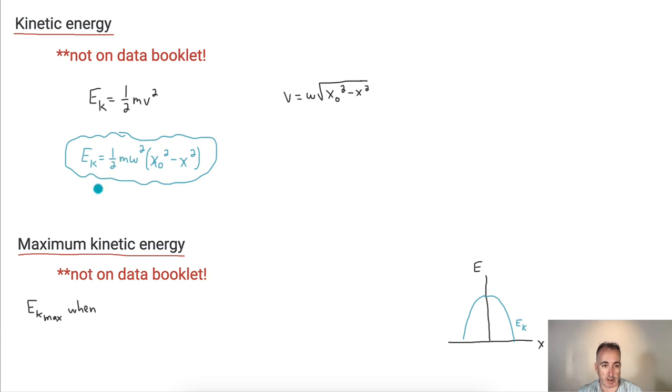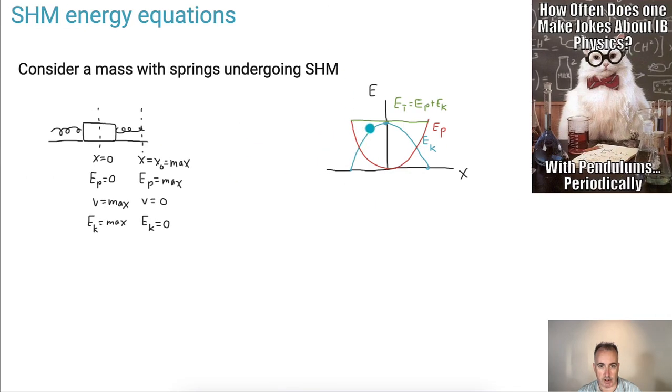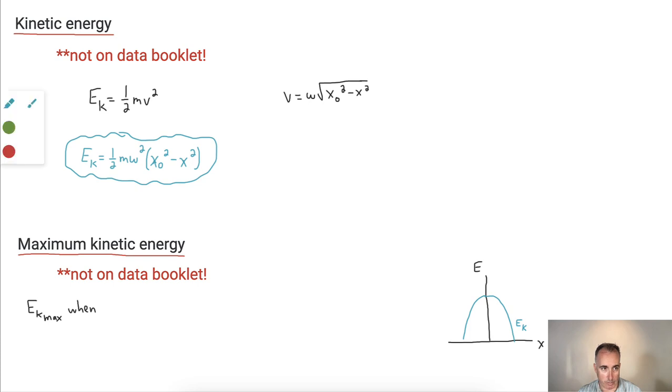All right. Well, now, also not on there, but it might be nice to know, is the maximum kinetic energy. Now, luckily, we can see that here on this graph like we were just looking at before. If we looked at this one here, the kinetic energy is at a maximum, notice, when x equals 0. So I'm going to write that down. So EK max when x equals 0. What does that mean? It means I take this equation. I just make x equal to 0.